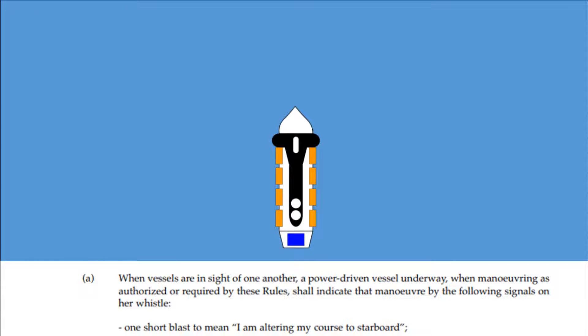When vessels are in sight of one another, a power-driven vessel underway, when maneuvering as authorized or required by these rules, shall indicate that maneuver by the following signals on her whistle. One short blast to mean I am altering my course to starboard.